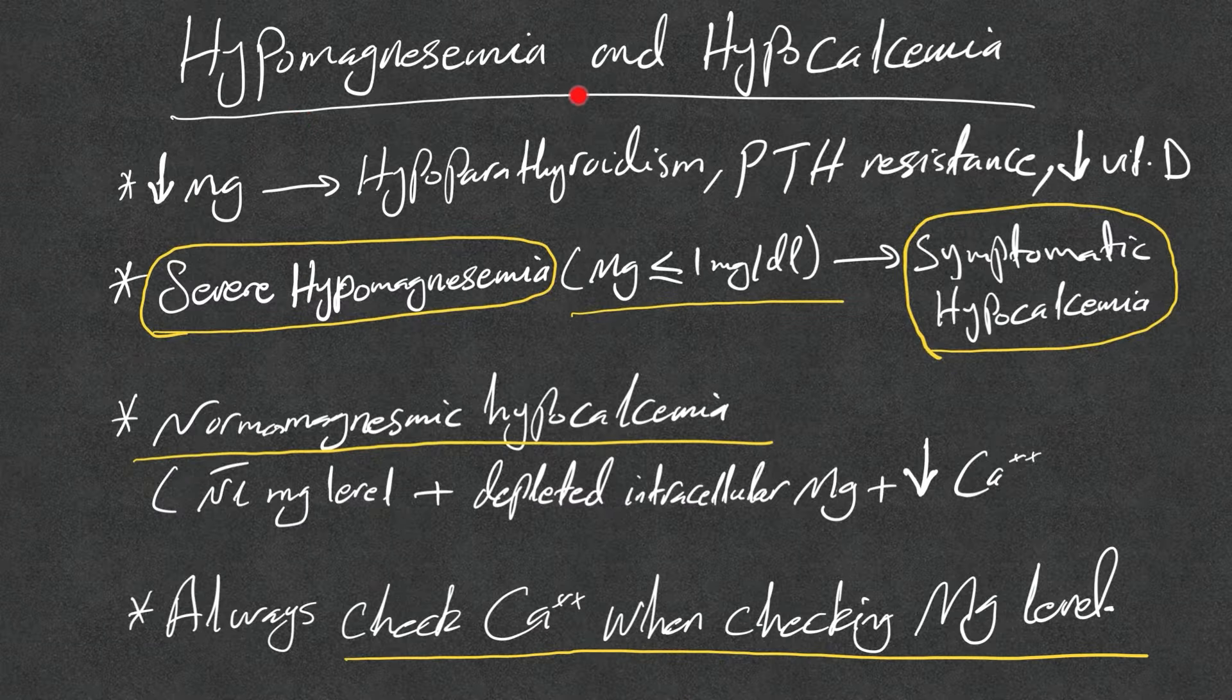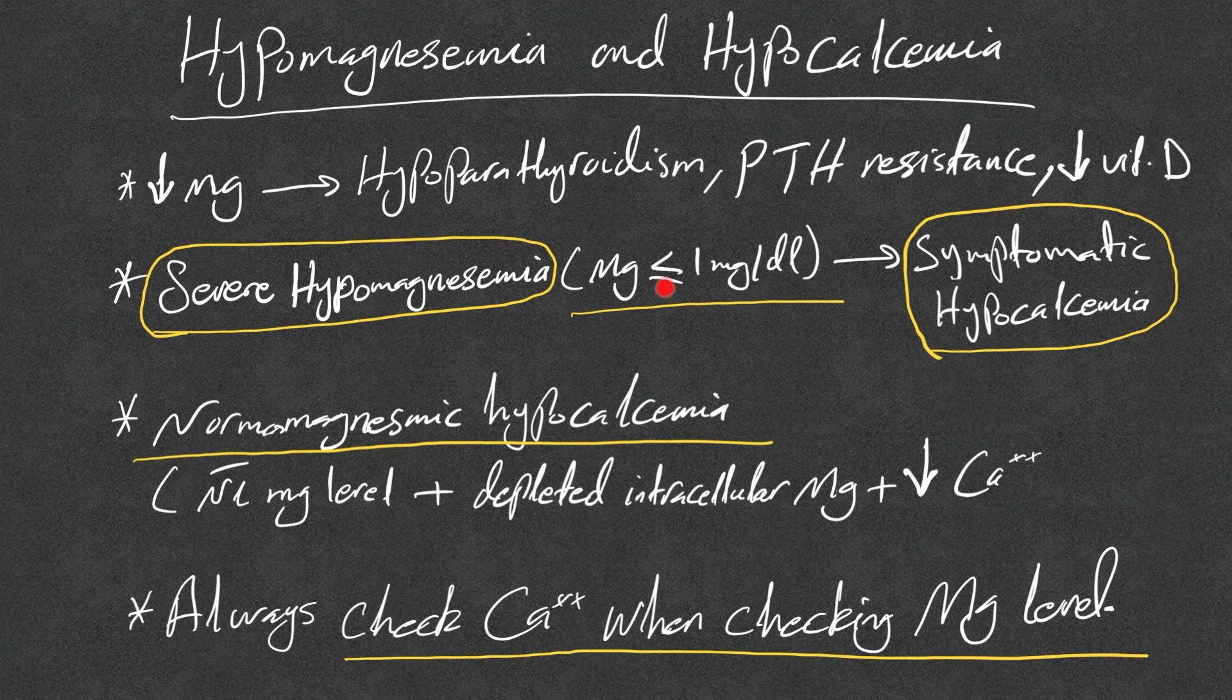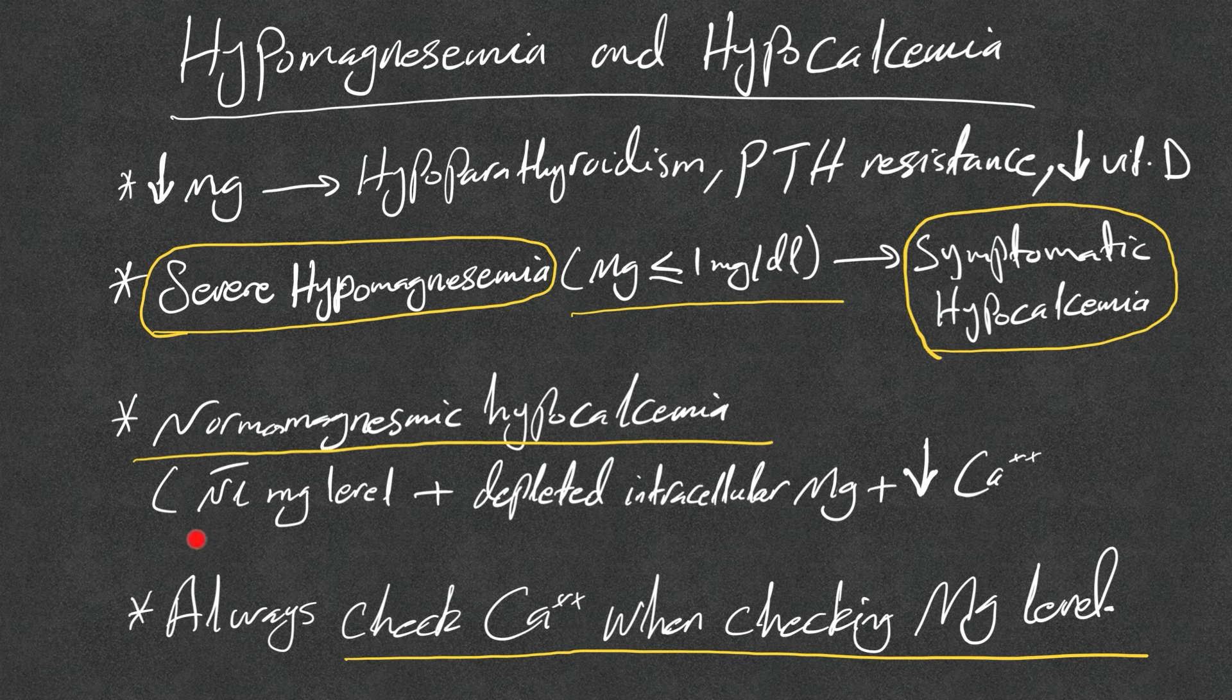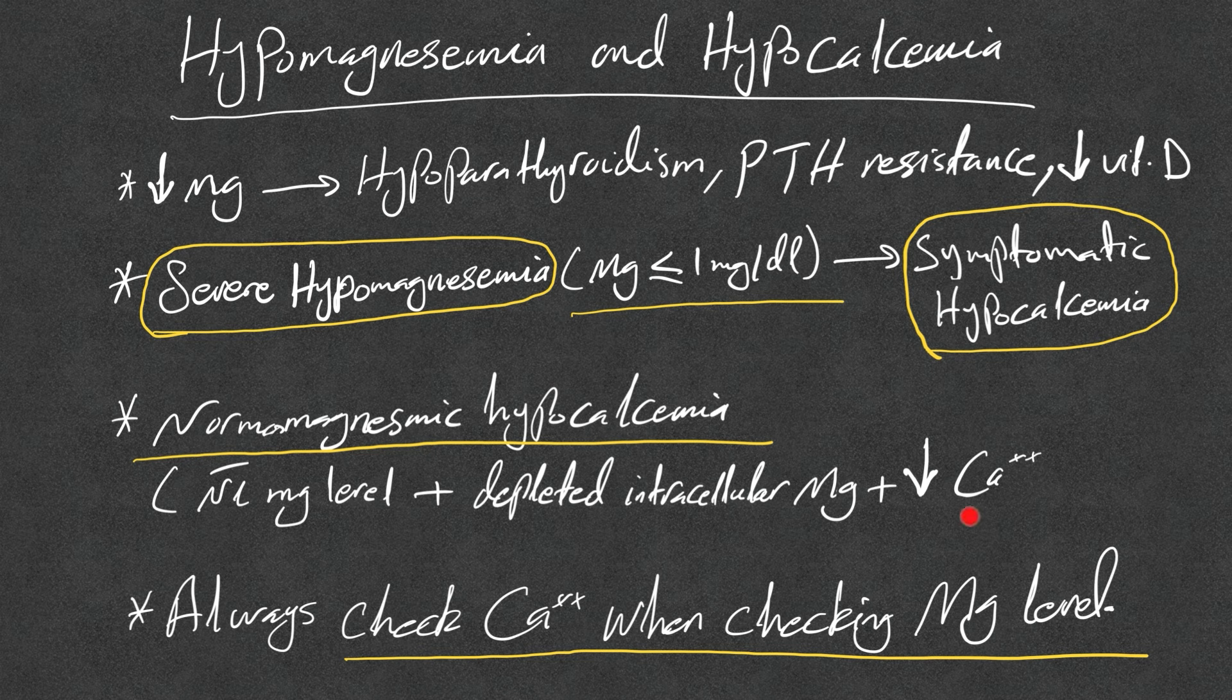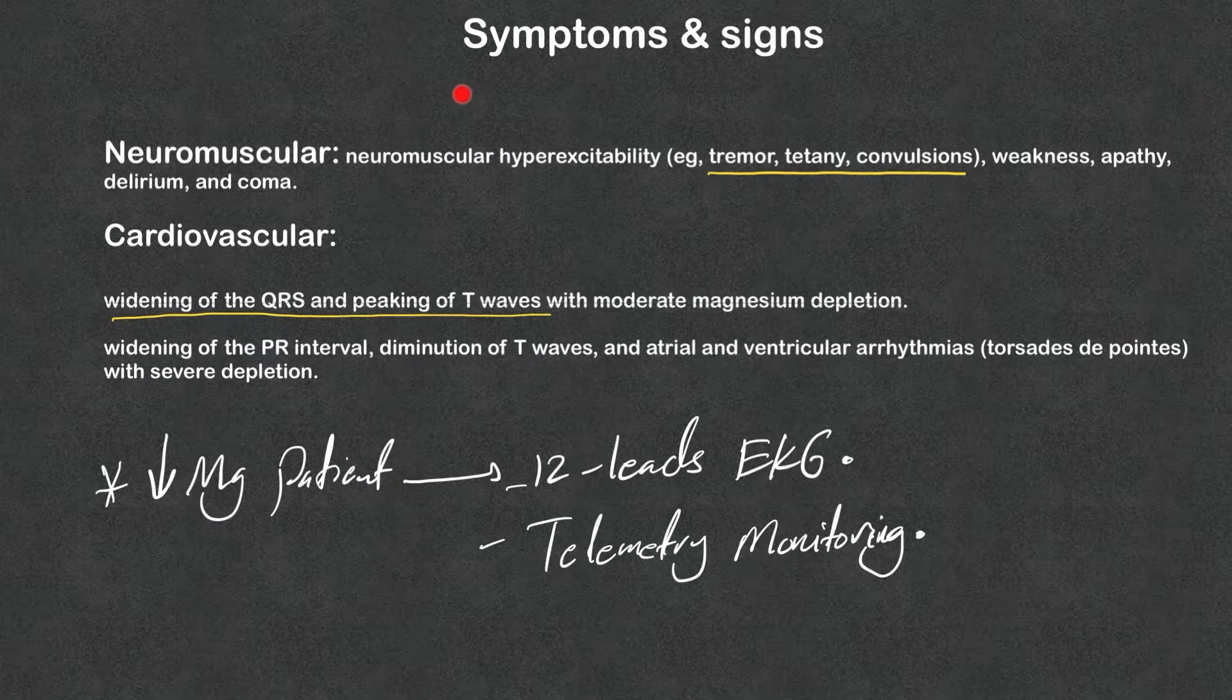Also there is an association between hypomagnesemia and hypocalcemia. Low magnesium level can cause hypoparathyroidism, parathyroid hormone resistance, and vitamin D deficiency. Severe hypomagnesemia, which is magnesium equal or less than 1 milligram per deciliter, can lead to symptomatic hypocalcemia. Also, there is another term called normal magnesemic hypocalcemia, where there is normal magnesium level but the intracellular magnesium stores are depleted, leading to hypocalcemia. Please always check calcium level when checking magnesium level and the opposite is true.